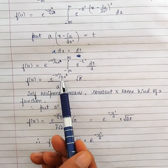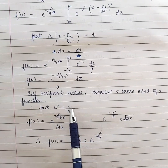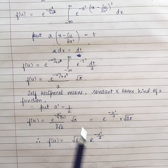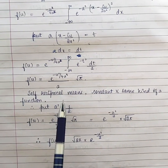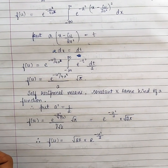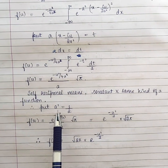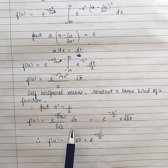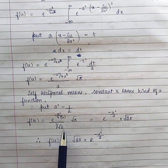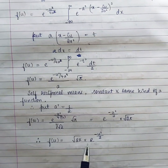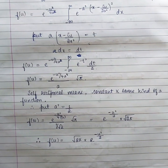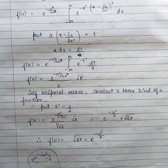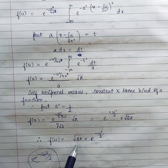So the Fourier transform is e^(-u²/(4a²)) · √π/a. Now to prove self-reciprocal: the given function is e^(-x²/2), so we substitute a² = 1/2. Then e^(-u²/(4 · 1/2)) = e^(-u²/2), and 1/a = √2, giving √(2π) · e^(-u²/2). This is the same form as the input function, proving e^(-x²/2) is self-reciprocal under Fourier transform.